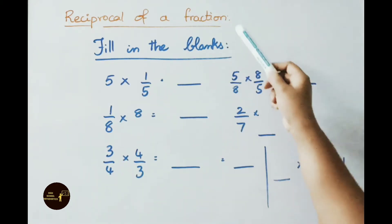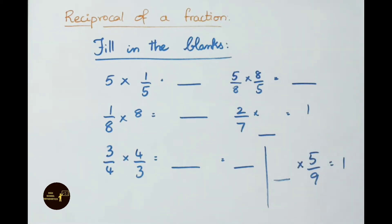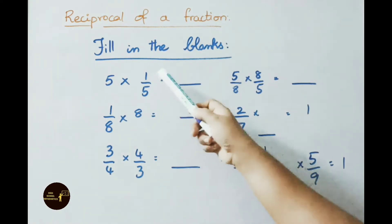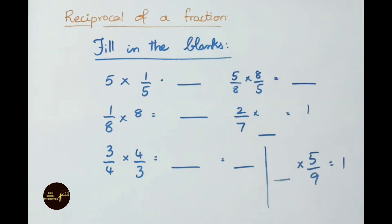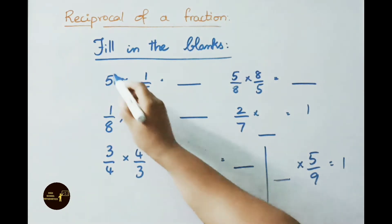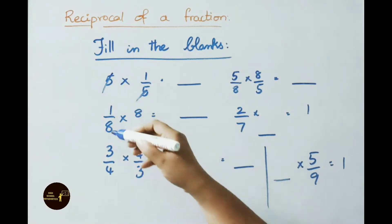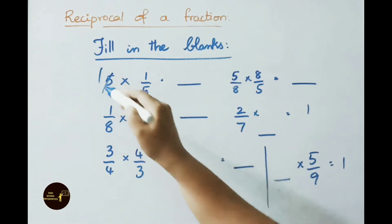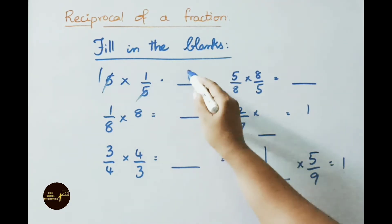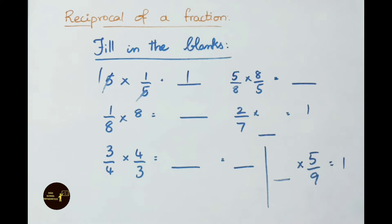Let us see reciprocal of a fraction — fill in the blanks. See the first one: 5 × reciprocal of 5 is 1/5. Here 5 and 5 cancel one time. So 1 × 1, answer is 1.